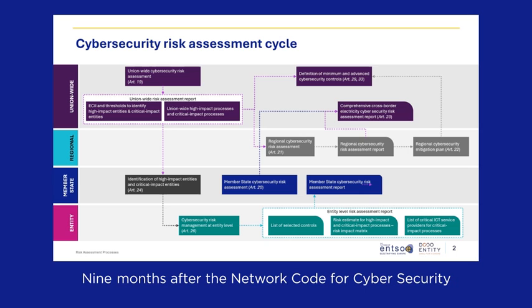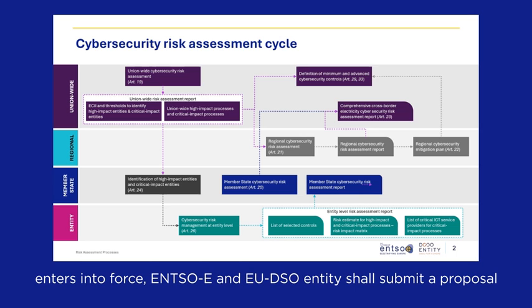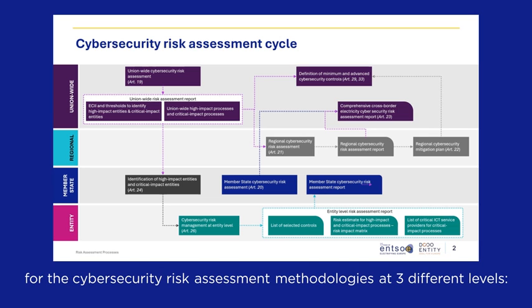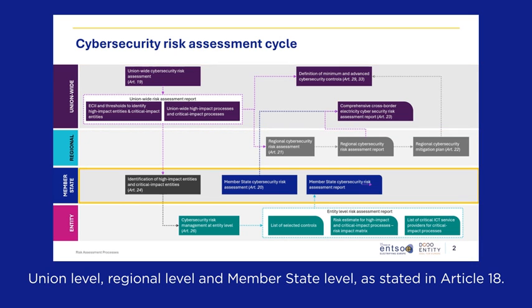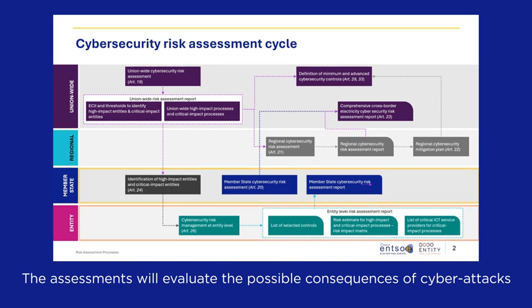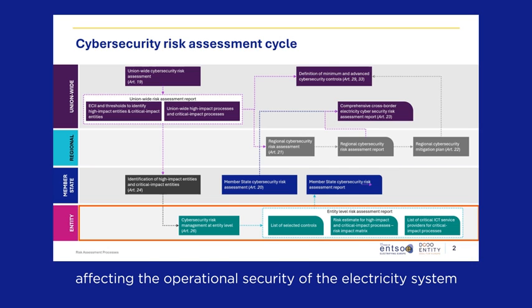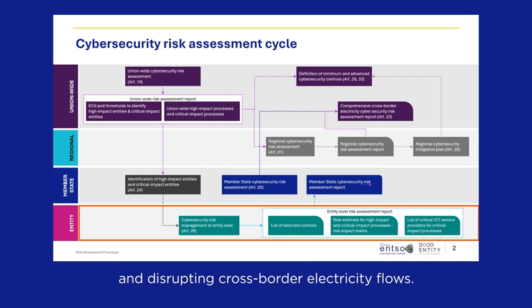Nine months after the Network Code for Cybersecurity enters into force, ENTSOE and EU-DSO Entity shall submit a proposal for the cybersecurity risk assessment methodologies at three different levels: Union level, regional level, and member state level, as stated in Article 18. The assessments will evaluate the possible consequences of cyberattacks affecting the operational security of the electricity system and disrupting cross-border electricity flows.